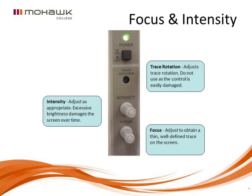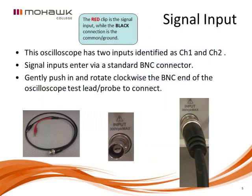The focus and intensity controls are used simply to set the sharpness and brightness of the trace. The intensity is simply the brightness — you don't want to set it too bright and leave it that way over a period of time, because you can damage the coating on the inside of the screen. Set it to a moderate setting — not too dim, but not excessively bright either.